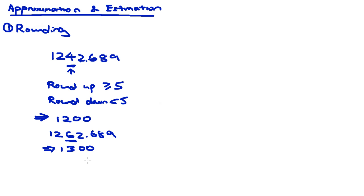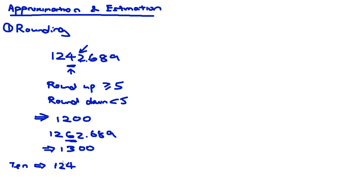That was rounding to the nearest hundred. But the question might ask you to round off to the nearest ten. If so, you look at the ones (singles) digit. For 1242.689, the thousands and hundreds digits stay as 1 and 2. The tens digit stays as 4, and since the singles digit is less than 5, the result is 1240.